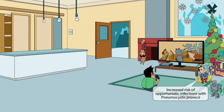We've added a Christmas tree along with a few more presents. One of the presents is a Superman action hero figure. Recall that superheroes are a symbol for Pneumocystis jirovecii, because the word 'hero' sounds like 'jirovecii.' So patients with this disorder are at an increased risk of developing opportunistic infections with Pneumocystis jirovecii.